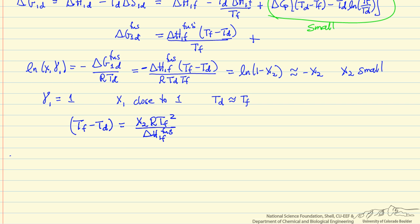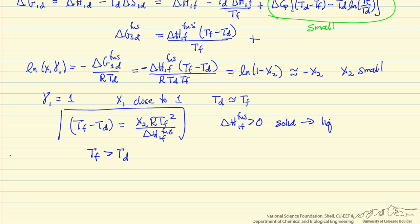With these simplifications we can write down the temperature difference Tf minus Td. Since delta H of fusion — going from solid to liquid — is greater than zero, the right side is positive, meaning the freezing point of the pure component is greater than the freezing point of the mixture. This confirms we have a freezing point depression, and this is the final equation used to calculate it.